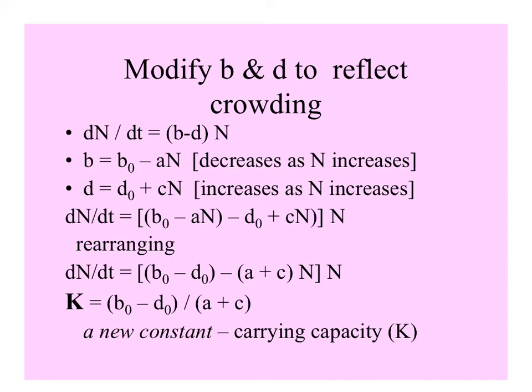We can use the basic equation, modifying B and D to reflect crowding. B, the birth rate, is diminished by a factor of A times N, which decreases as population size increases. And D is modified by a constant C times N, and that quantity increases as the population size increases.